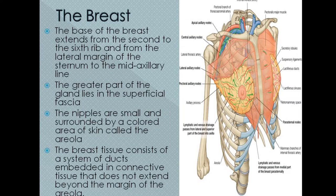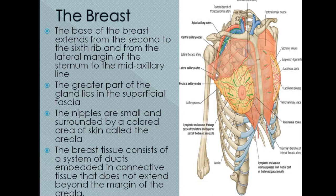The base or bed of the breast extends from the second rib to the sixth rib. Vertically, the extent of the breast is from the second to the sixth rib, and its transverse or horizontal extension is from the lateral margin of the sternum up to the mid-axillary line. So it is somewhat circular, with vertical extent from the second to sixth rib and horizontal extent from the lateral margin of the sternum to the mid-axillary line.